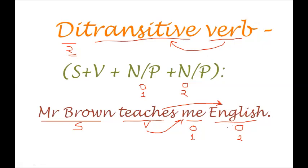With these two objects, the sentence is considered ditransitive. One important thing to remember: 'English' is the direct object, and 'me' is the indirect object. It is very essential to remember this properly because you will encounter these sentences in voice change, where it helps a lot. If you haven't yet prepared for this, follow the link above — there is a video on voice change in this channel where direct and indirect objects are used together, giving us the retained object.